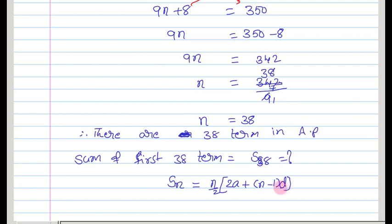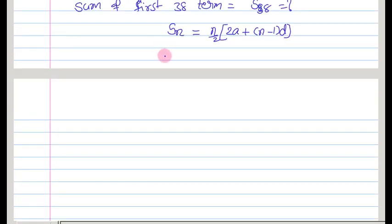This formula we have to apply. By using this, we can write that s38, here as we have 38 terms, sum of all terms in this AP means s38 we have to apply. That means in the place of n, we need to substitute 38.